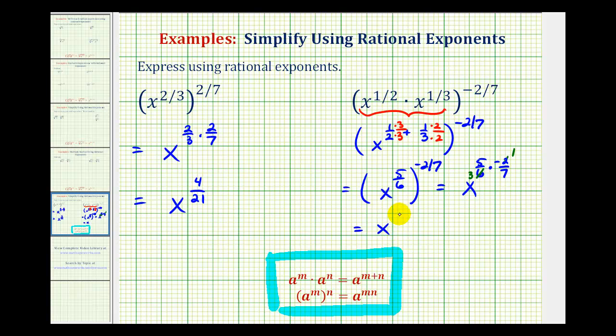So we'll have x raised to the power of, the numerator is going to be five times negative one, or negative five. The denominator is going to be three times seven, or twenty-one. So we have x raised to the power of negative five twenty-firsts.